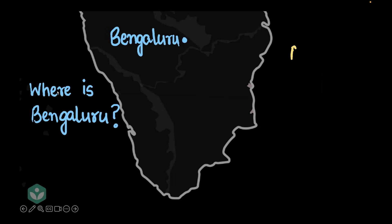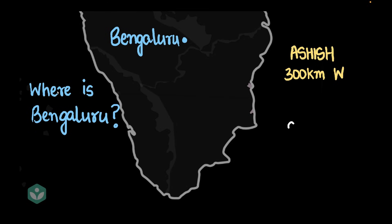I call Ashish and ask him where Bengaluru is. Ashish says, 'Bengaluru is 300 kilometers west.' Then I call Selvi and ask her the same question. Selvi says, 'It's 600 kilometers north.' I think, wait a minute — either Selvi's lying or Ashish is lying, or maybe both of them are lying.